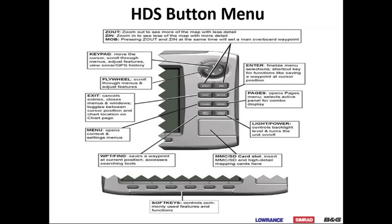This is a quick reference of the button layout for an HDS unit. It's more so for Gen 1s, but the same principles apply for Gen 2 and Gen 3 — except on Gen 2 and 3 there are no soft keys at the bottom, it's more touchscreen. This gives you an overview of what each button does.